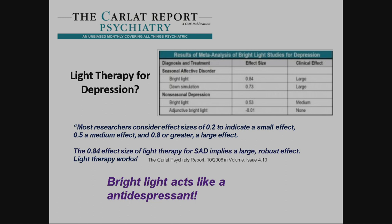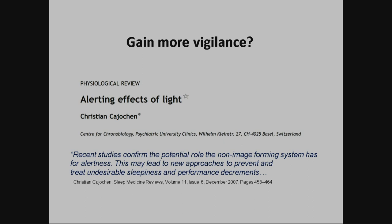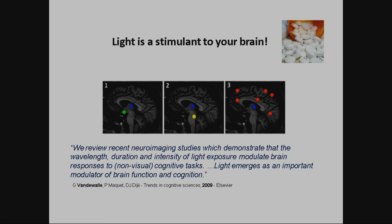There are many publications about light therapy for depression. If you compare medication with light therapy, the effect size from medication is 0.2 to 0.5. With light, we have 0.8 — 80% of persons react to light if you have the right light at the right time. So bright light acts like an antidepressant. You also have alerting effects of light. Christian Cajochen, head of chronobiology in Basel, published studies confirming the role of the non-image-forming system on alertness. Light is a stimulant to your brain — that's what the science says.